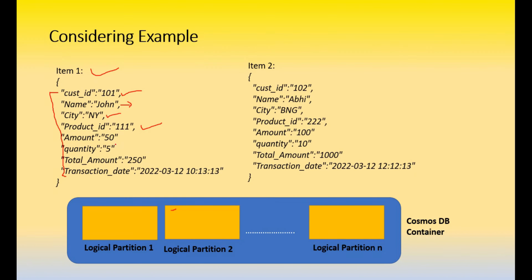Amount and quantity are not good candidates for partition keys. Transaction date is also not a good candidate - if you choose a date as a partition key, each date will have its own logical partition. When generating reports for the last month, you'd have to touch all those logical partitions, hitting every one of them. Similarly, if a customer wants to update a transaction, the program must search all logical partitions to find that particular record, which severely impacts performance.